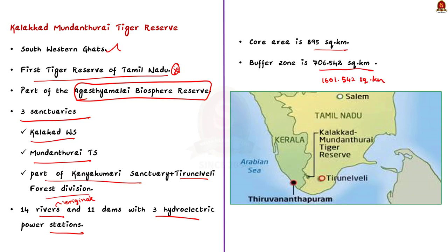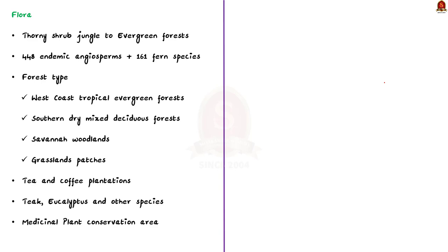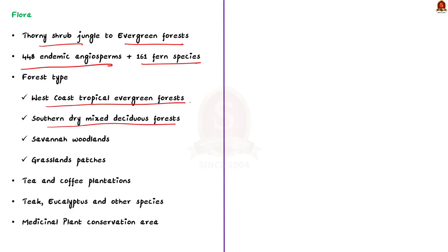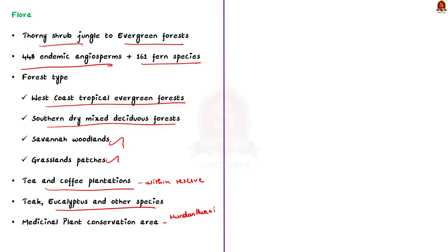Now let us see about the attributes of this habitat. Talking about the flora, the vegetation of the reserve varies from thorny scrub jungle to lush evergreen forest. As many as 448 endemic species of angiosperms have been identified, and there are 161 fern species. The forest type can be mainly categorized under West Coast Tropical Evergreen Forest and Southern Dry Mixed Deciduous Forest. In addition, savannah woodlands and grassland patches can also be seen. There are tea and coffee plantations within the reserve, and old plantations of teak, eucalyptus and other miscellaneous species. The Mundanthurai Plateau and Nambikkovil Forest areas have been identified as a medicinal plant conservation area.